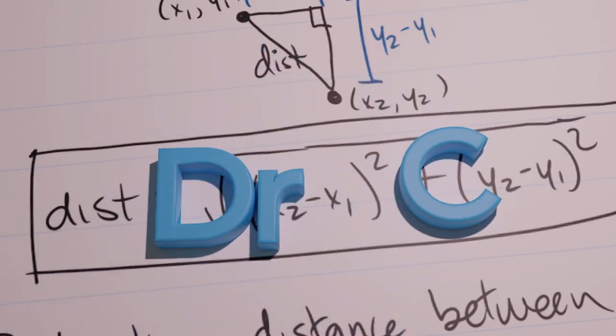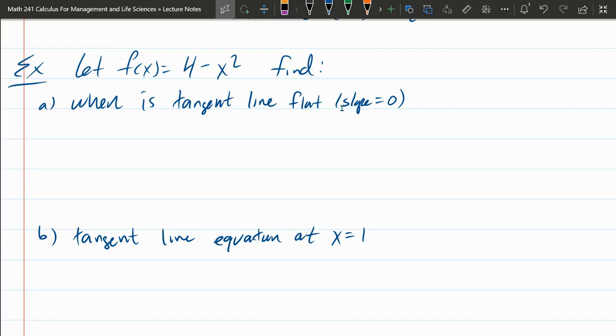In this problem, we're given a polynomial and we're asked about tangent properties. When is the tangent line flat, meaning when is that slope 0? And what is the tangent line equation at x equals 1? So let's start. Almost any problem in calculus class, you're going to need to take a derivative.